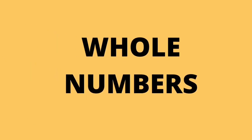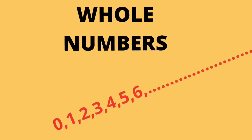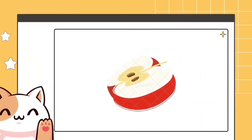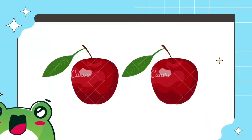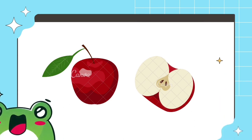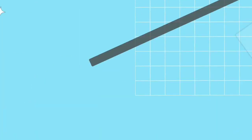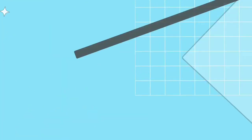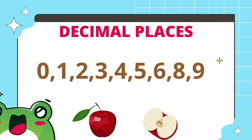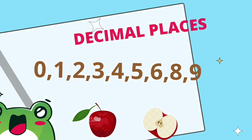Whole numbers are the set of numbers you get if you start with 0 and then count by 1, 2, 3, 4 and so on. But there are things besides whole amounts. It's possible to have just part of something, like just part of an apple, and that means there are in-between amounts. You might have 1 apple or 2 apples, but you could also have something in between, like 1 and a half apples. How can the base 10 number system handle situations like this?